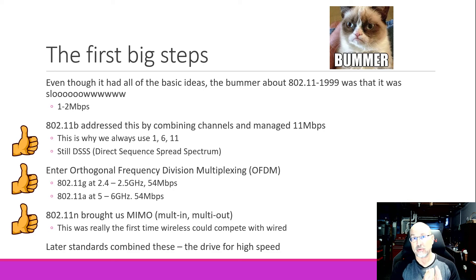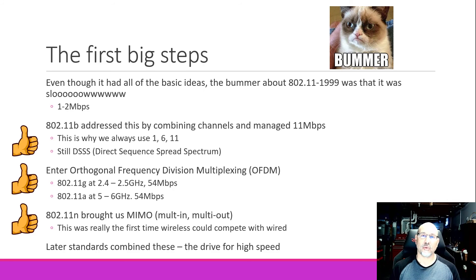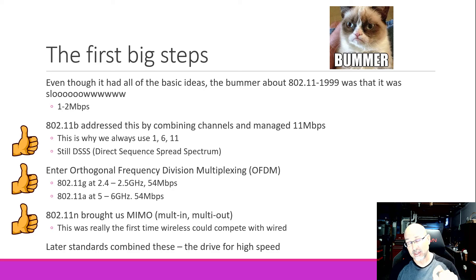The next big change, and really where we are today, is 802.11n. 802.11n brought our first big changes for layer 2, and also something called MIMO — multi-in, multi-out. The later standards, 802.11ac and ad, are all combining these things to get the super-fast speeds we're all hoping for. There may come a time when wired connections to desktops are a thing of the past. 802.11n brought in that new technology, and was really the first time we could say wireless speeds can compete with wired.